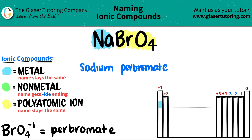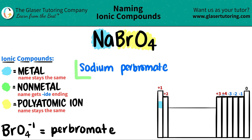Do we need a Roman numeral? Because it's ionic. But since sodium, the metal, is not a transition metal, I don't need to have a Roman numeral. Group ones don't need a Roman numeral. So you're done — NaBrO4 is just sodium perbromate.